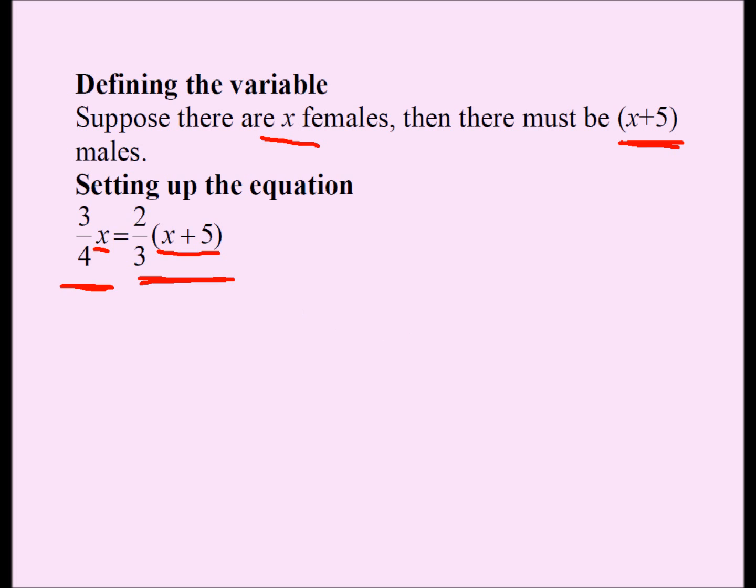Now, once you have the equation, it's not very difficult to solve the equation. The main idea is to write the equation correctly and make sure you understand how we wrote this equation. Three-fourths of the females must equal two-thirds of the males, and x plus 5 is the number of males, x is the number of females. So let's go ahead and solve this equation on the next slide.